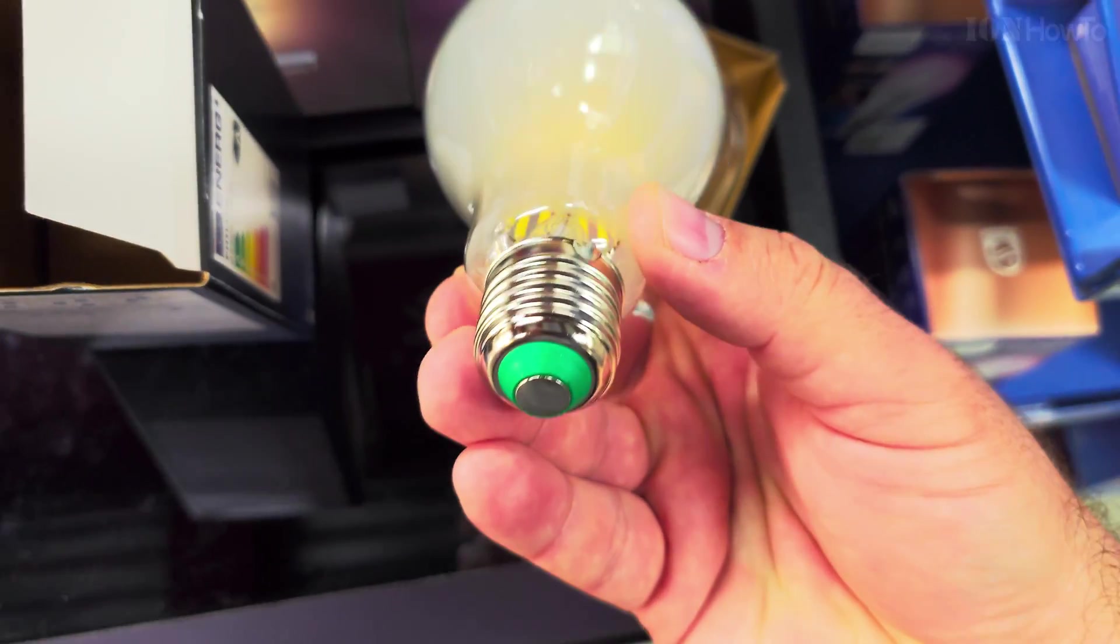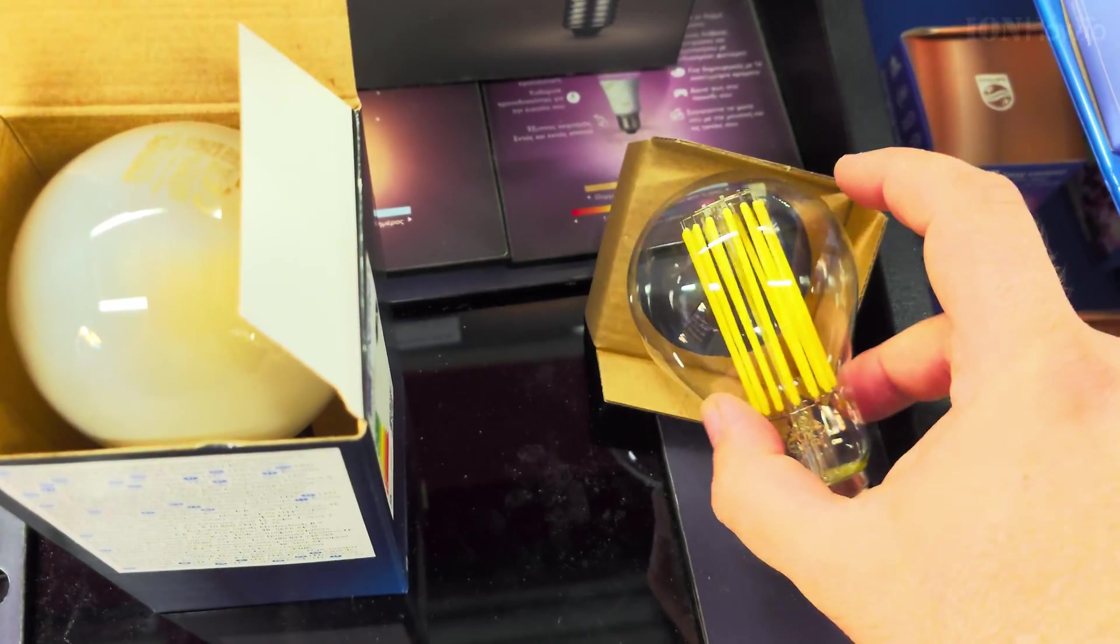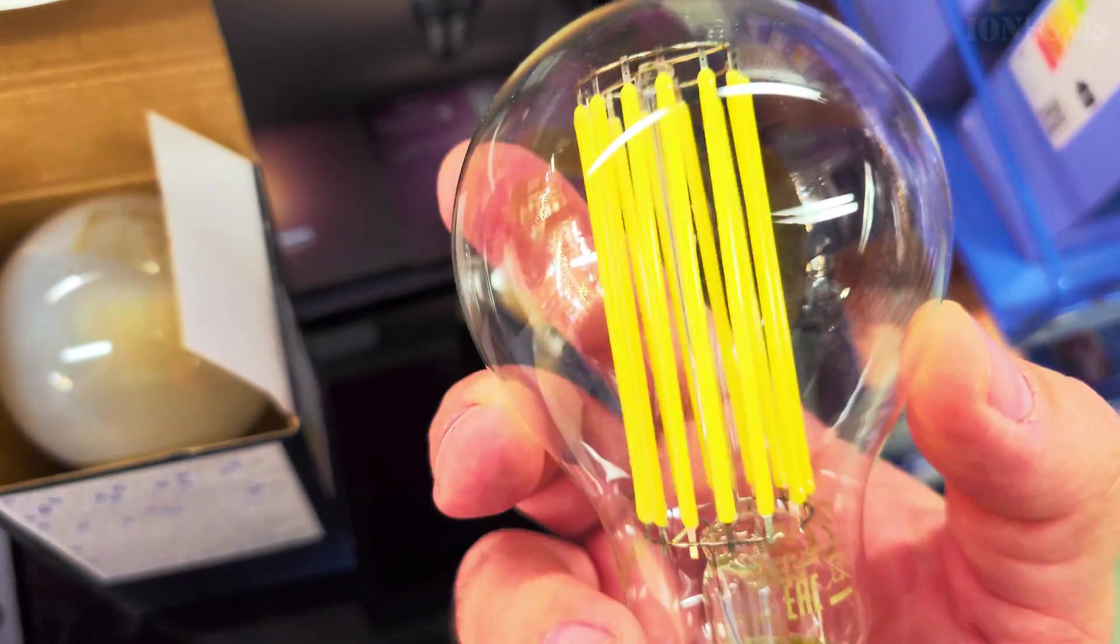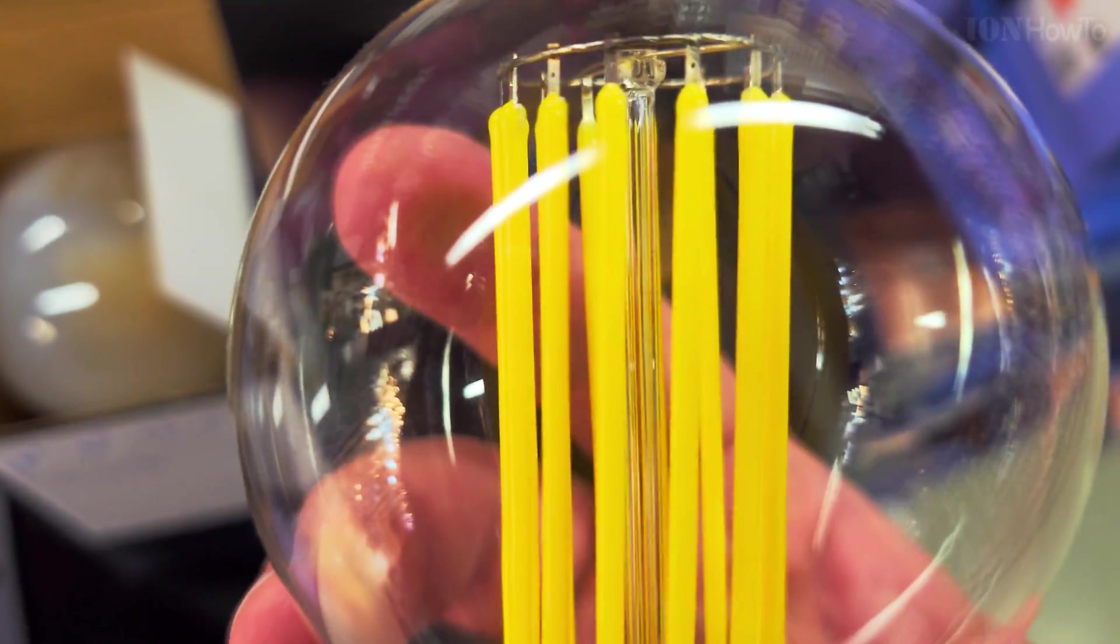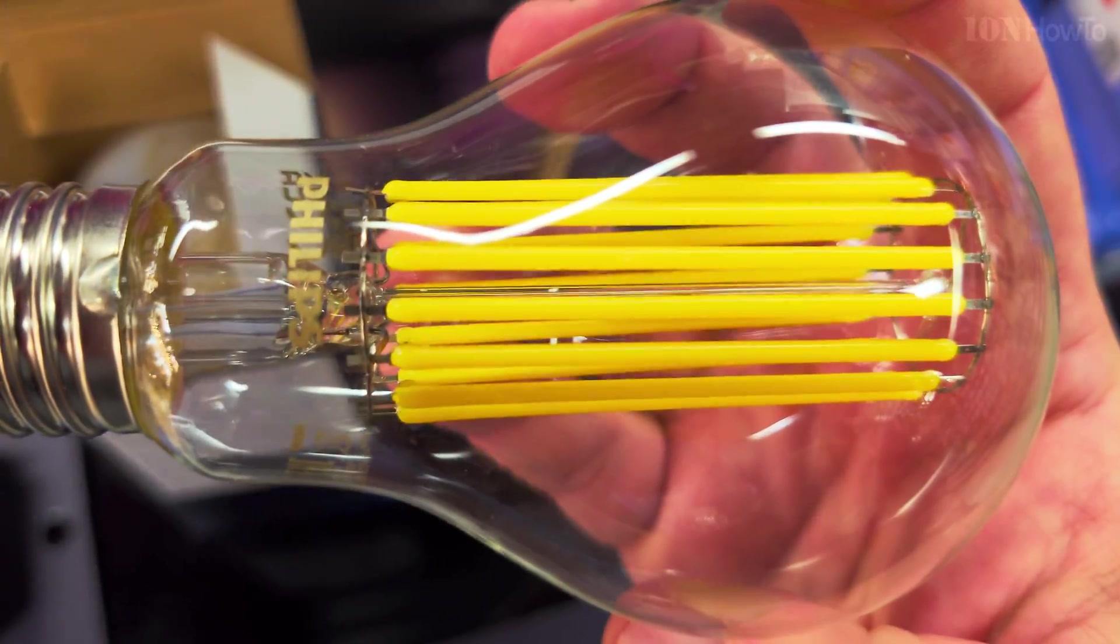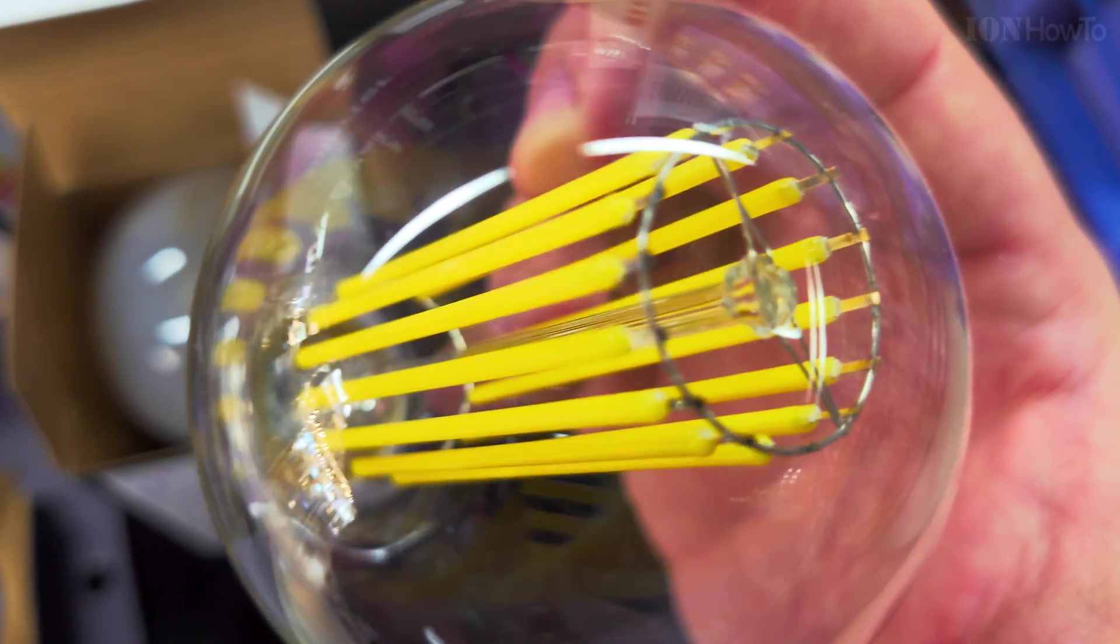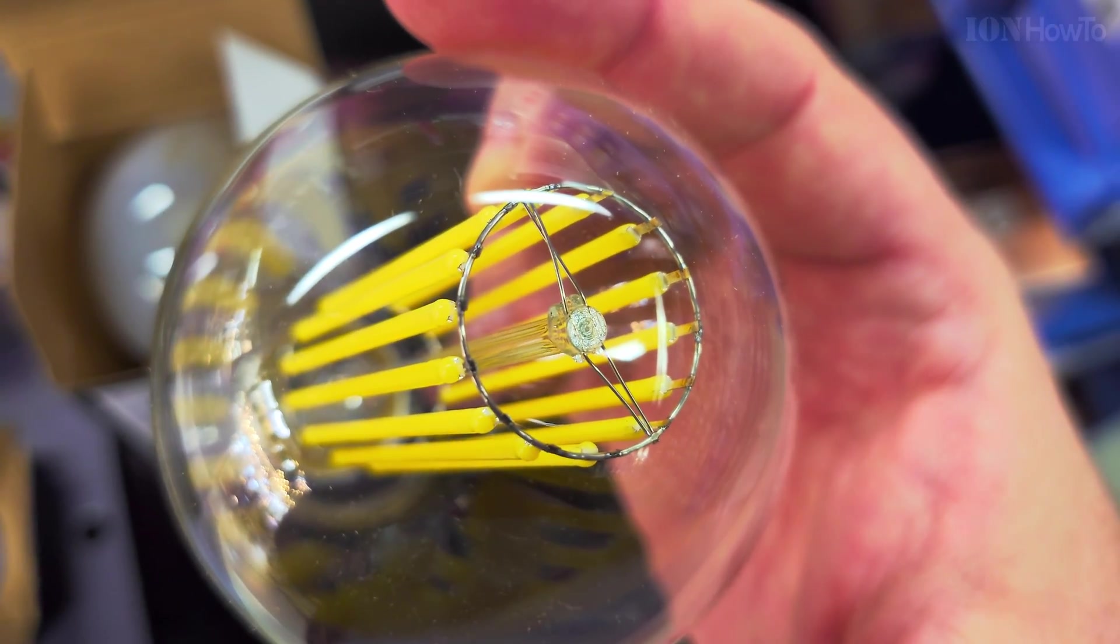They are very efficient, this type is really what you should buy now. The problem with the Master, the Philips Master, is they're very expensive - it was like 37 euros for one light bulb, that was pretty expensive. I thought let's try the frosted glass one.